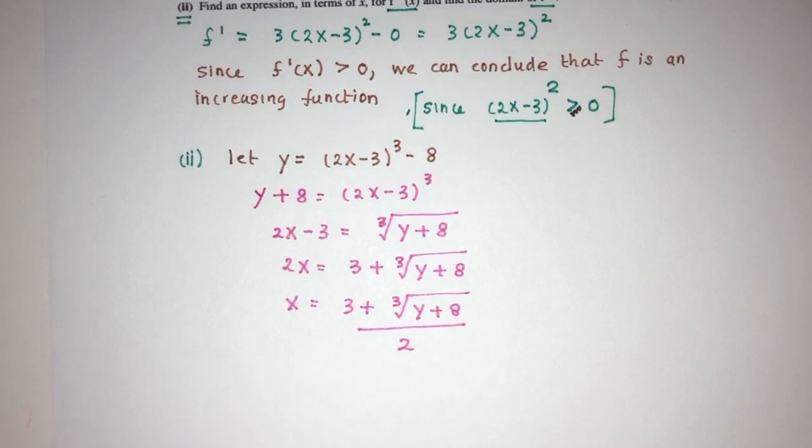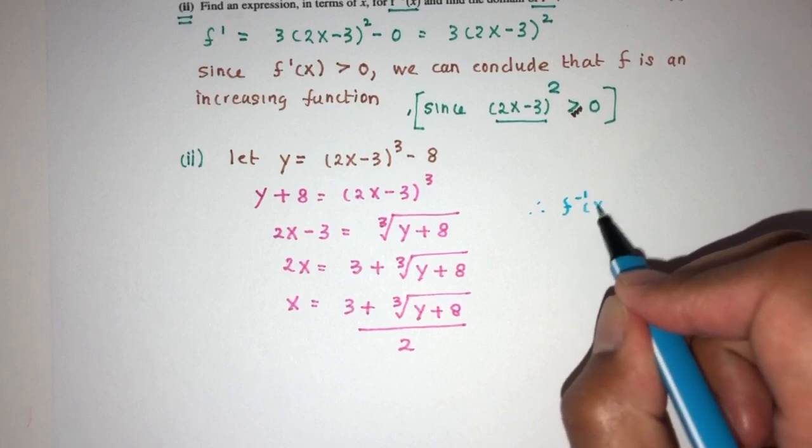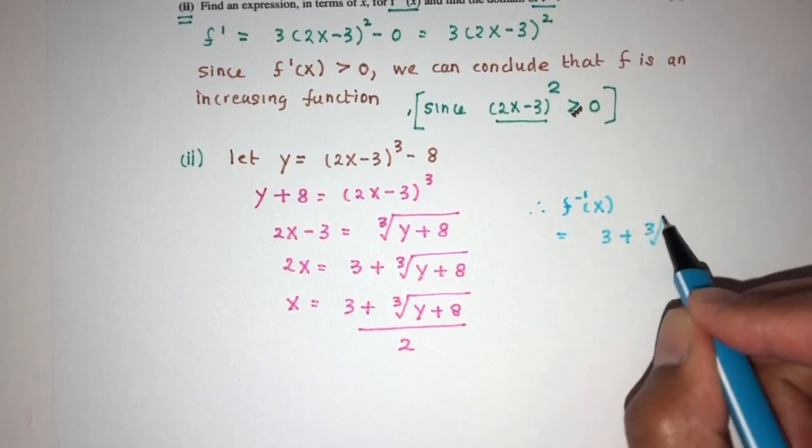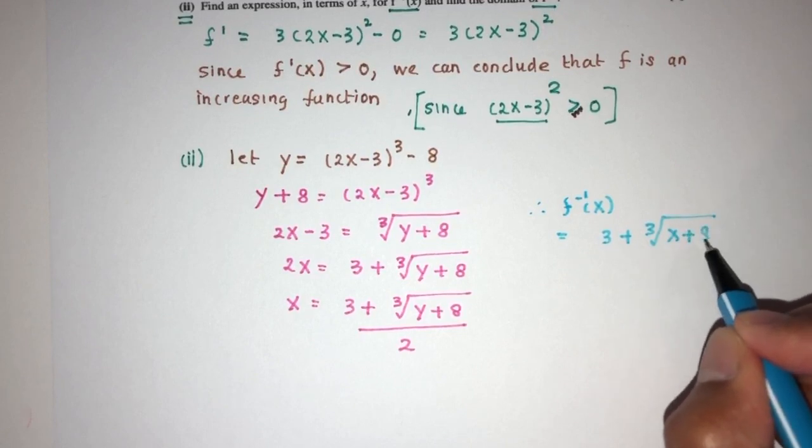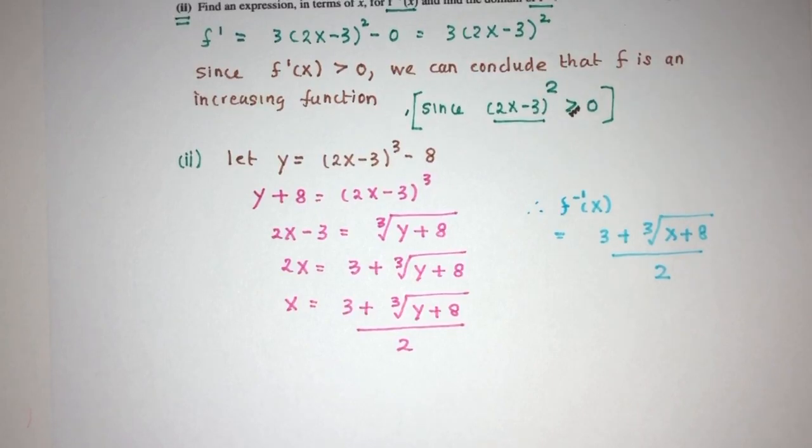Okay, so great. Now, we have x in terms of y, so finally, we conclude that f inverse of x, that will have to be (3 + cube root of x + 8) over the value of 2. And that will be your question, part 2.